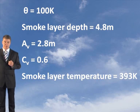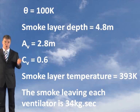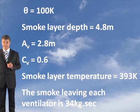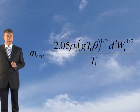Your temperature of your smoke layer is 393 degrees Kelvin and the smoke leaving each ventilator has been worked out at 34 kilograms per second. Now as the ventilator is located more than 2 metres away from the edge of the reservoir, this is the formula you should be applying.